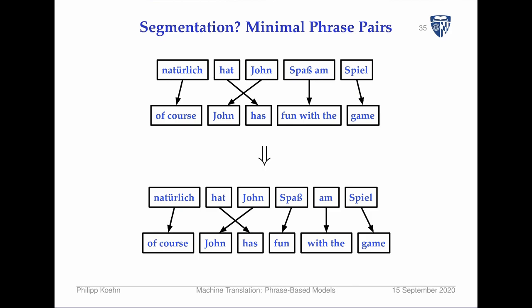The solution here starts by going in what seems like the wrong direction: the idea of breaking things down into minimal phrase pairs. We interpret the model in terms of minimal phrase pairs. For instance, where you have two words on one side and three words on the other, we can actually break that up into smaller pieces based on the word alignment within phrase pairs.